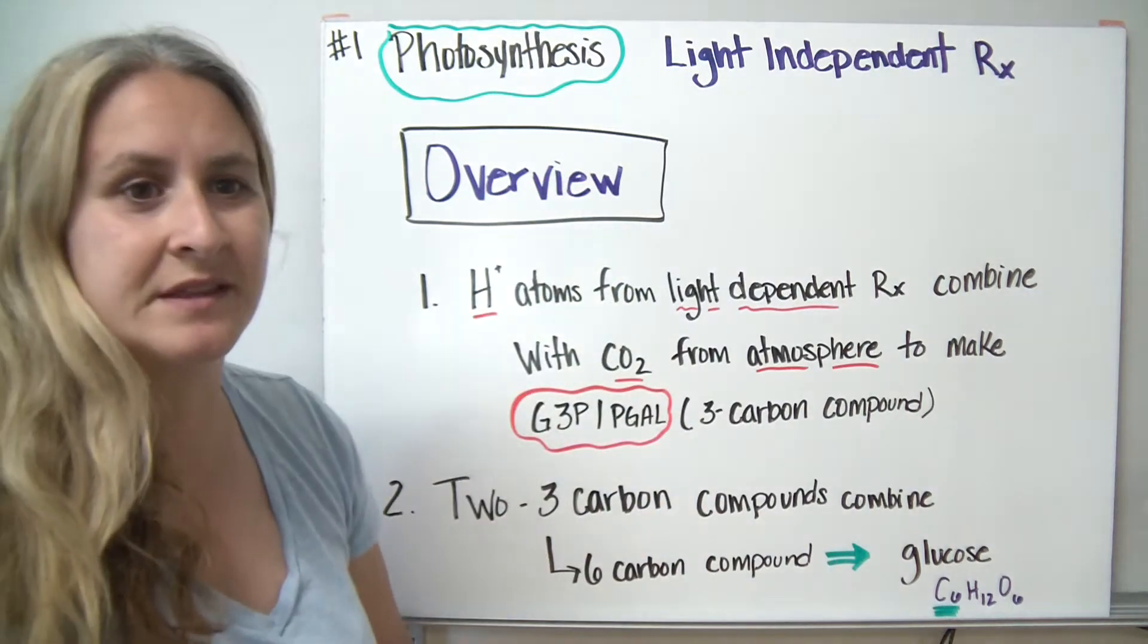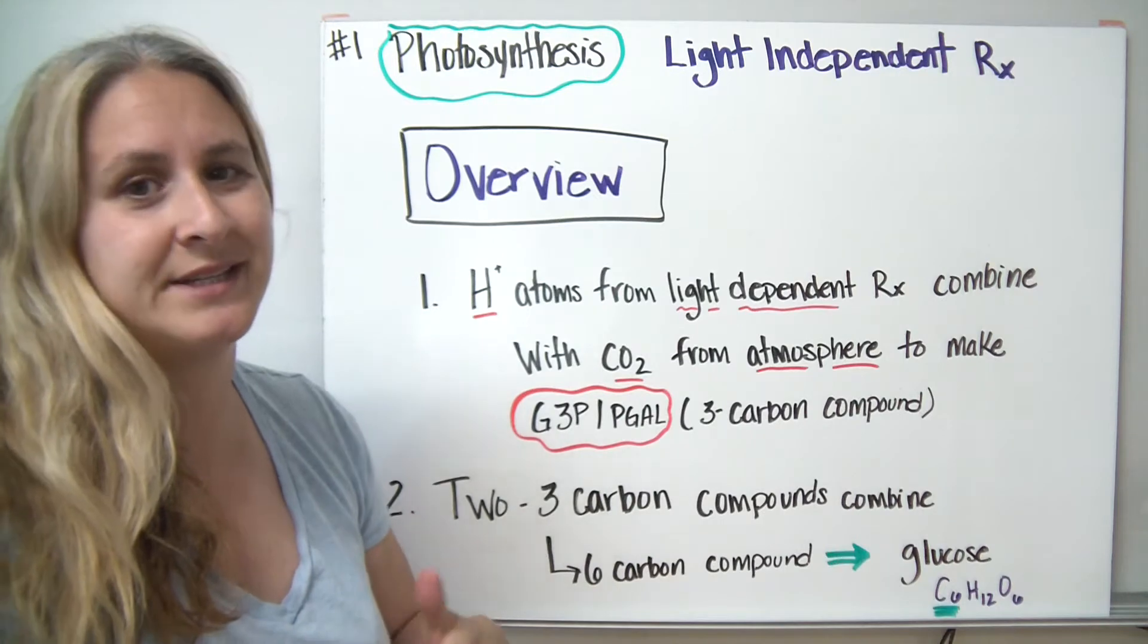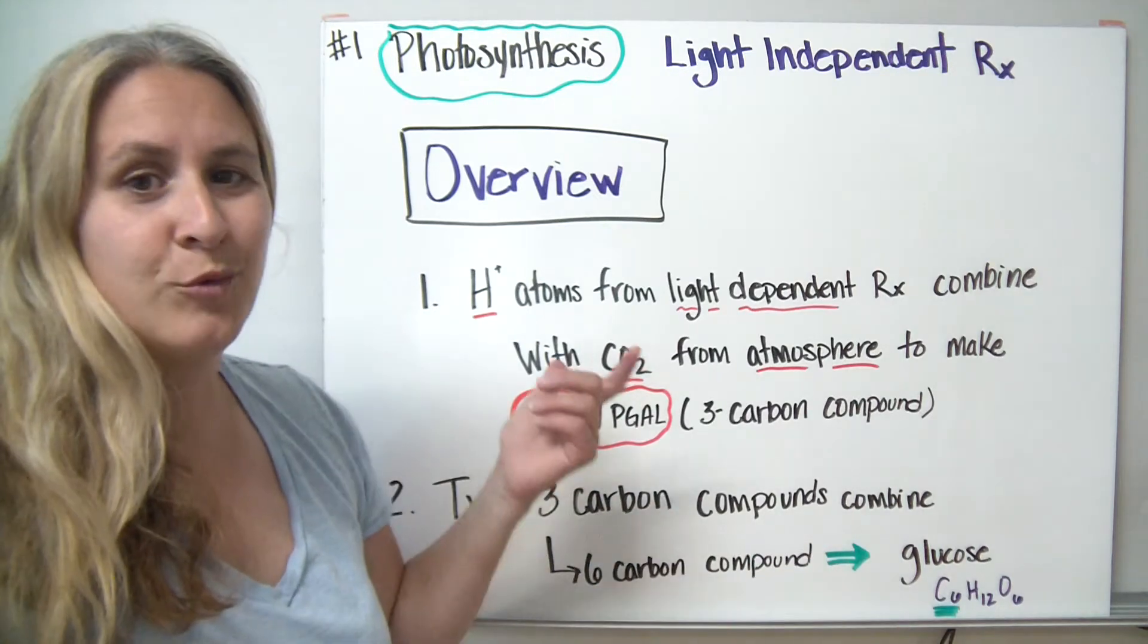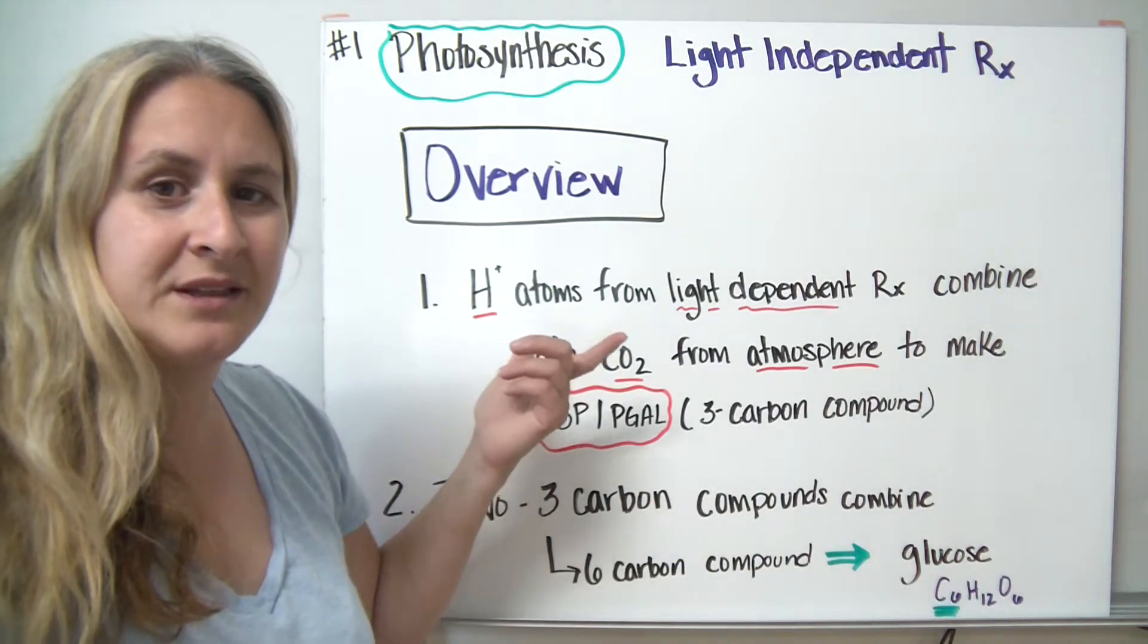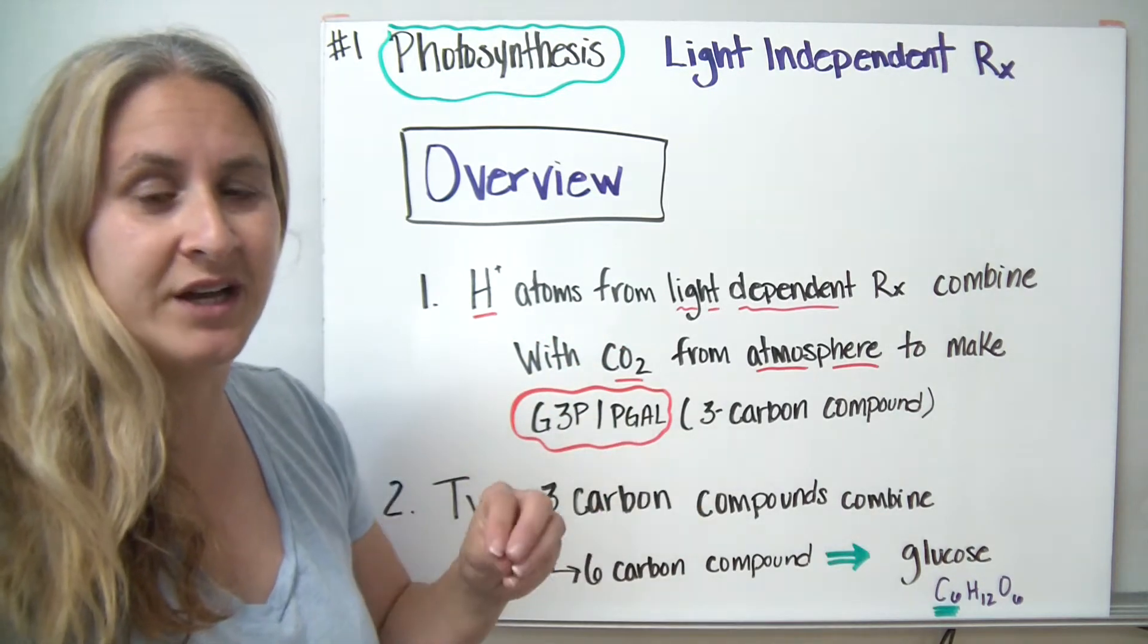We're going to continue our discussion on photosynthesis today. In the previous lesson, we learned about the light-dependent reactions. One of the things that happened during the light-dependent reactions was that water was split into hydrogen and oxygen.